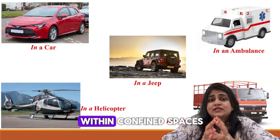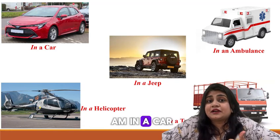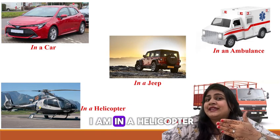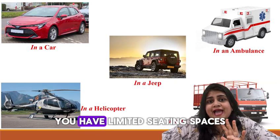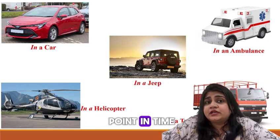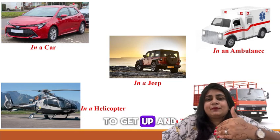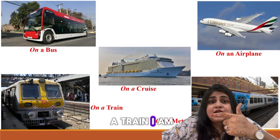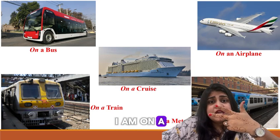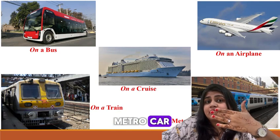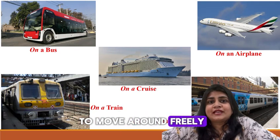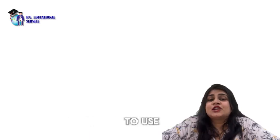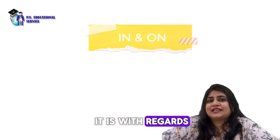For small moving vehicles within confined spaces, we say: 'I am in a car,' 'I am in an ambulance,' 'I am in a truck,' 'I am in a minivan,' and 'I am in a helicopter.' All five examples have limited seating and do not allow you to get up and move around. Whereas for large moving vehicles, we say: 'I am on a train,' 'I am on a plane,' 'I am on a cruise ship,' 'I am on a yacht,' 'I am on a metro car' — all of which allow the passenger to move around freely when the vehicle is in transit.